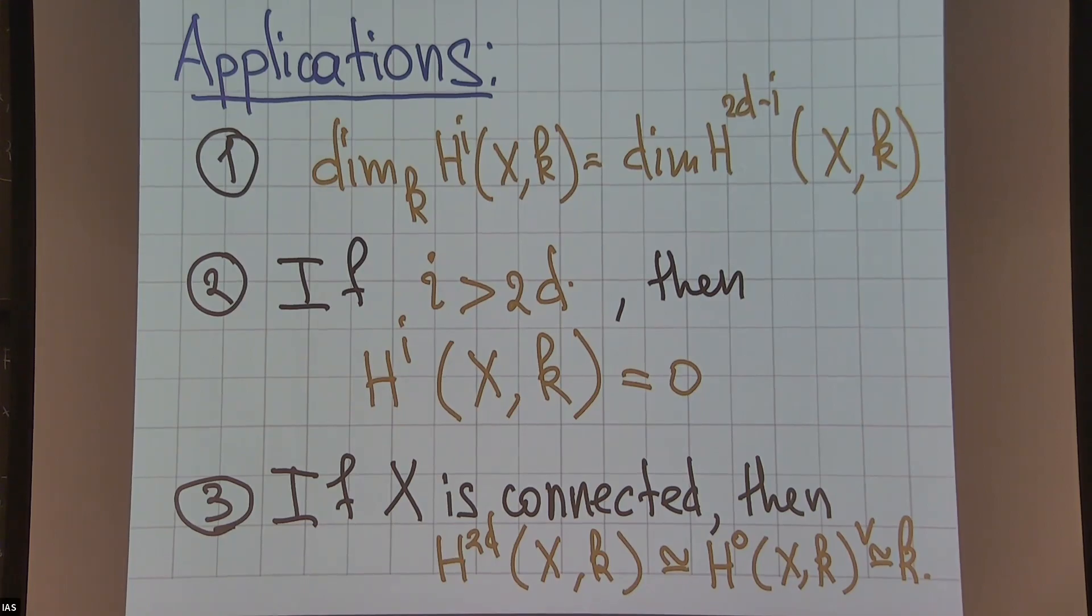This is interesting for two reasons. First, that it's non-zero is already a non-trivial fact, because if X is not compact this group is just zero. Second is that it's exactly one-dimensional, and in some sense this is the exact content of Poincaré duality. Let me mention it at least as a consequence, even though it says a stronger statement - this is somehow the main part.